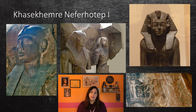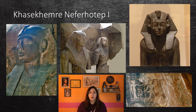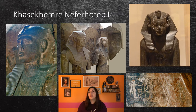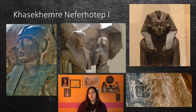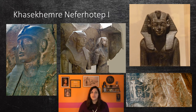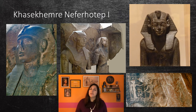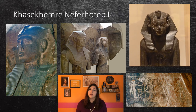Khasekhemre Neferhotep I is one of the best attested kings of the 13th Dynasty, ruling for about 11 years. He seems to have come from a non-royal family in Thebes with a military background. A man named Ha'unk F is recorded in the Turin Canon Papyrus as the father of Neferhotep I, which is an extremely rare occurrence because the name of a non-royal is not typically included. He is known for a relatively high number of objects attested to him, found all throughout Egypt and even as far north as Byblos and as far south as Lower Nubia, the majority being scarab seals and rock inscriptions. The statue on the left was found in the naos of Neferhotep at Karnak and depicts Neferhotep I with his brother and successor Sobekhotep IV. It seems he held a co-regency for a few months with his younger brother Sihathor before Sihathor predeceased Neferhotep I, then it is possible that he appointed his other brother Sobekhotep IV to be his co-regent and heir.